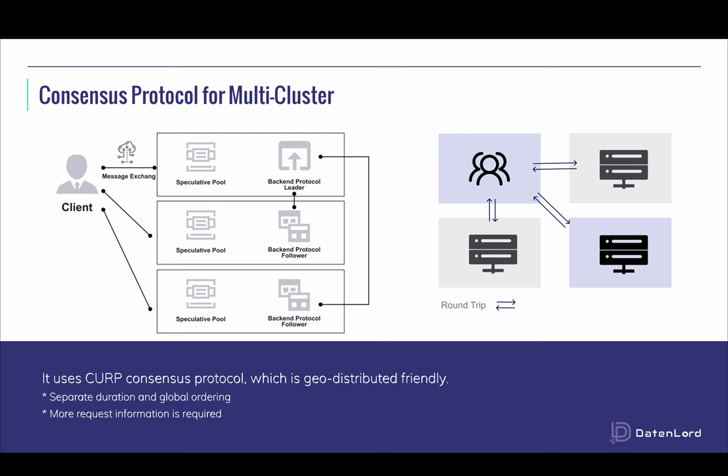The back-end protocol is the second barrier, ensuring every request has its own position in the global ordering eventually. To summarize the CURP protocol: it tries the request optimistically first; if it fails, another consensus protocol handles the rest. The CURP protocol can complete the consensus in one roundtrip if there are no conflicting requests. Even in the worst case, two roundtrips are enough.